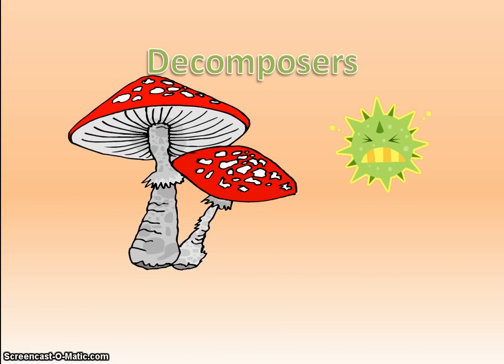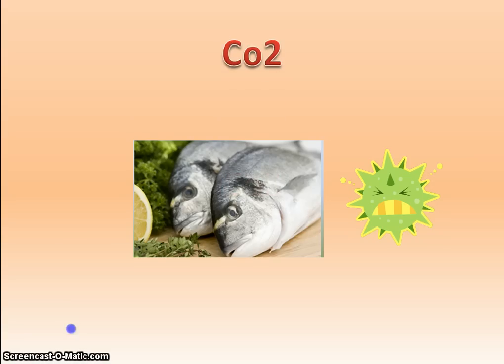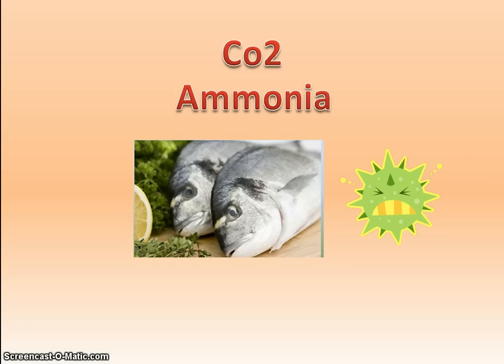The bacteria which act as decomposers are called putrefying bacteria. Bacteria and fungi act as decomposers by secretions from their body surfaces, which decompose the organic matter in dead plants and animals into simpler substances and liberate ammonia and carbon dioxide, etc. They absorb some of these simple substances for their own maintenance and release the remaining matter into the soil, water, and air to be used by producers again.